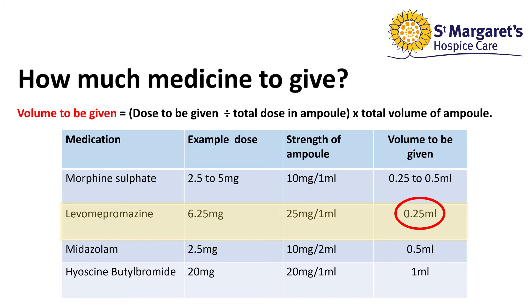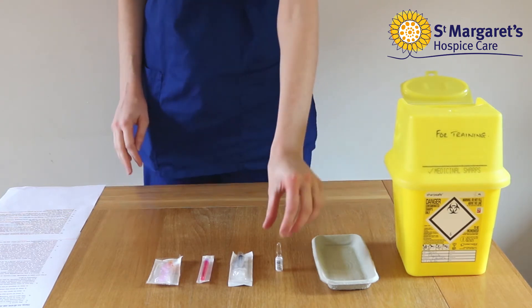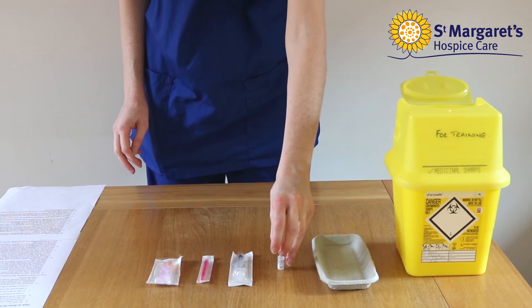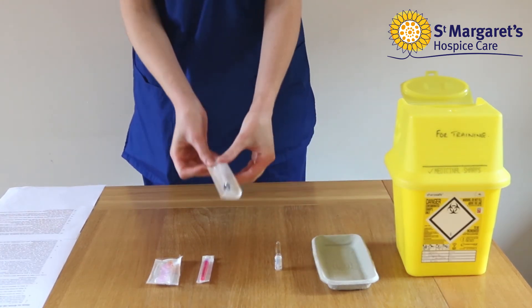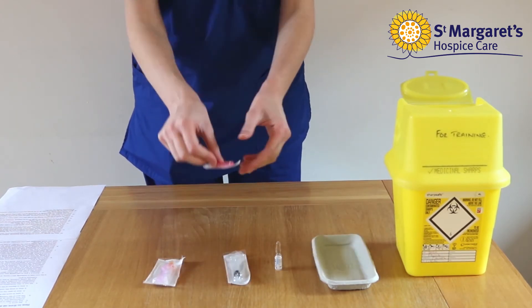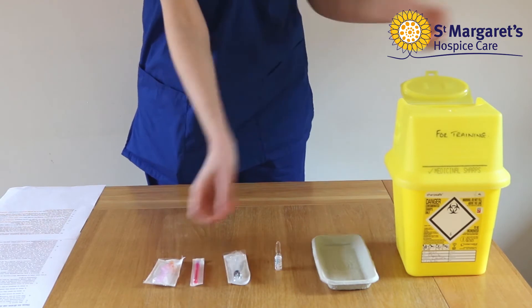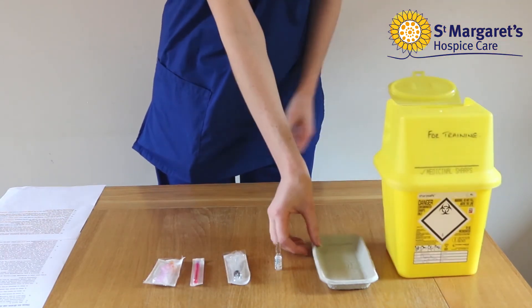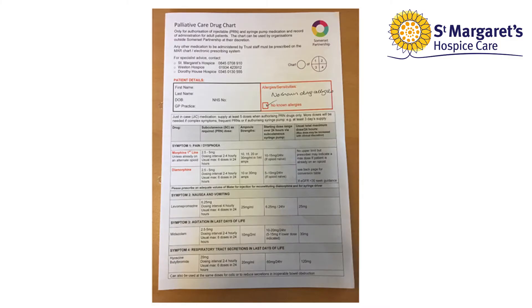Remember, if you are unsure about how much medicine to give, please do not give the medicine and call the advice line or the district nurses for help. Next, prepare your equipment. You will need the ampoule of medication, a syringe, a blunt needle for drawing up the medication, a sharps box, a clean container to place the equipment in, and the palliative care drug chart.